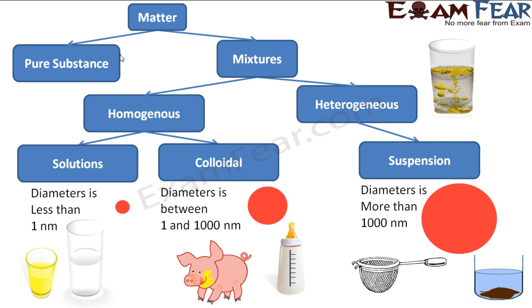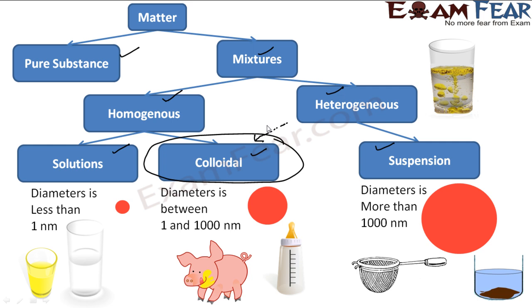So, matter is classified into pure substance and mixture. Mixture is further classified into homogeneous and heterogeneous. Homogeneous mixtures are further classified into solutions and colloidal, and heterogeneous into suspension. There is some debate — some people say colloidal is part of heterogeneous, some say it is part of homogeneous — but it looks more like a homogeneous solution. This is a debatable topic.